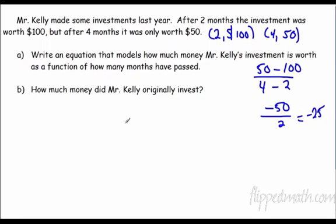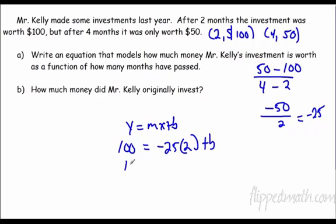y equals mx plus b. My y is 100. My m is negative 25. My x is 2. So I have 100 equals negative 50 plus b. Add 50. So he started with 150. So our equation is y equals negative 25x, negative, he's losing money, plus 150.